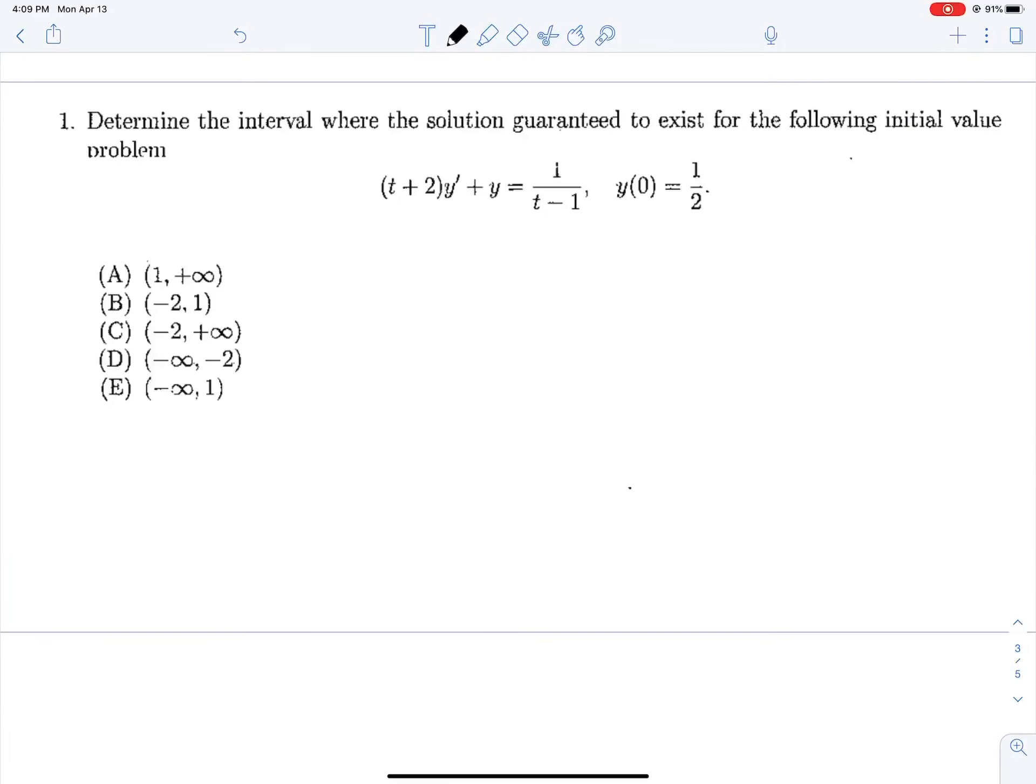And then question 1, which is our last question, we're determining the interval where the solution is guaranteed to exist. We'll divide out our t plus 2, y prime plus 1 over t plus 2, y equals 1 over t minus 1, t plus 2.